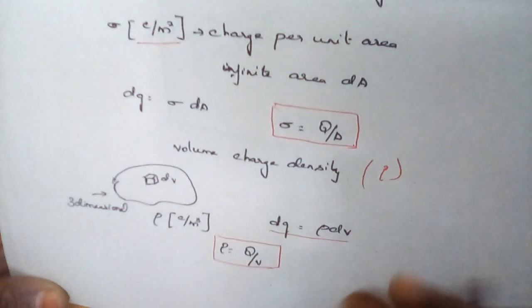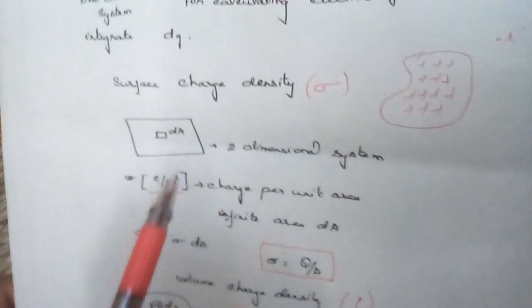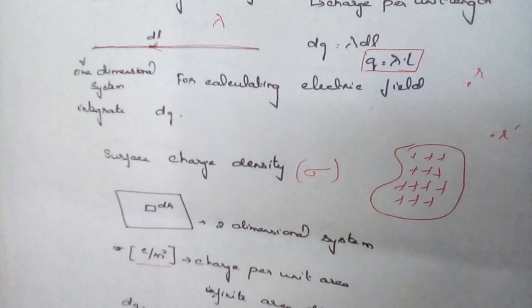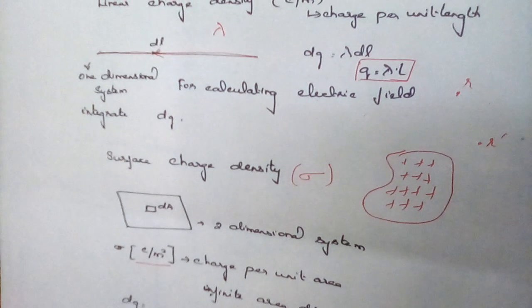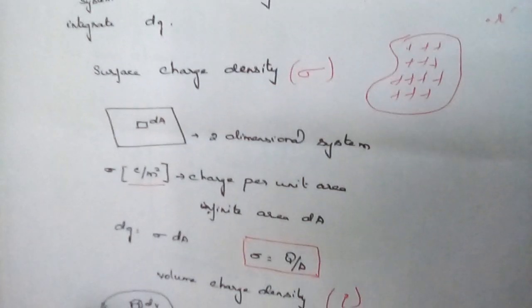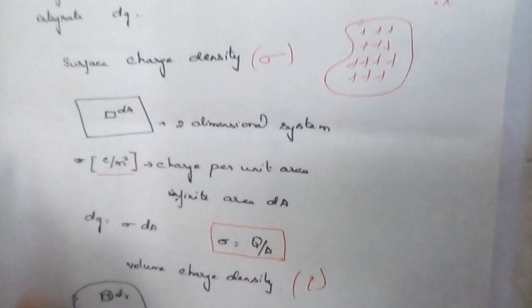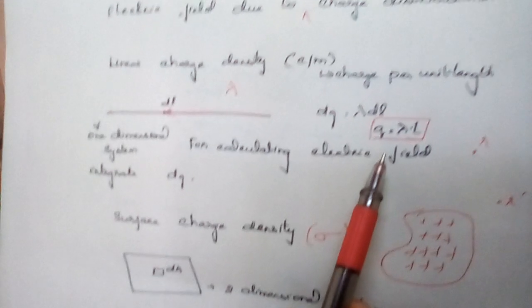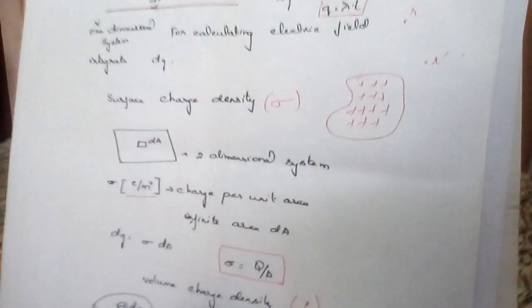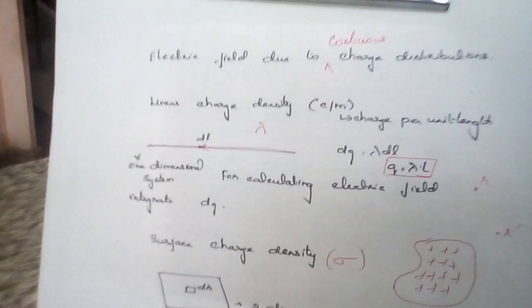The line charge density has the unit coulombs per meter — it is a one-dimensional system. Surface charge density has the unit coulombs per meter squared — it is a two-dimensional system. Volume charge density is a three-dimensional system. The charge expressions are: Q equal to lambda times L for line charge; sigma equal to Q divided by A for surface charge; and rho equal to Q divided by V for volume charge.